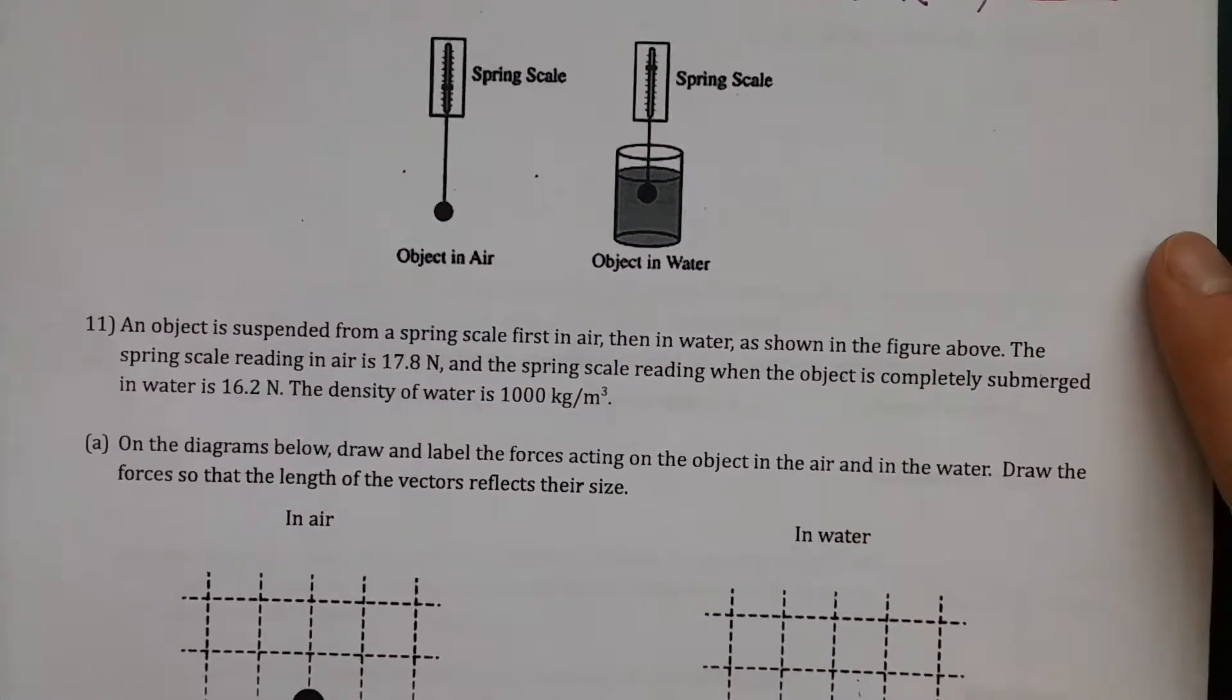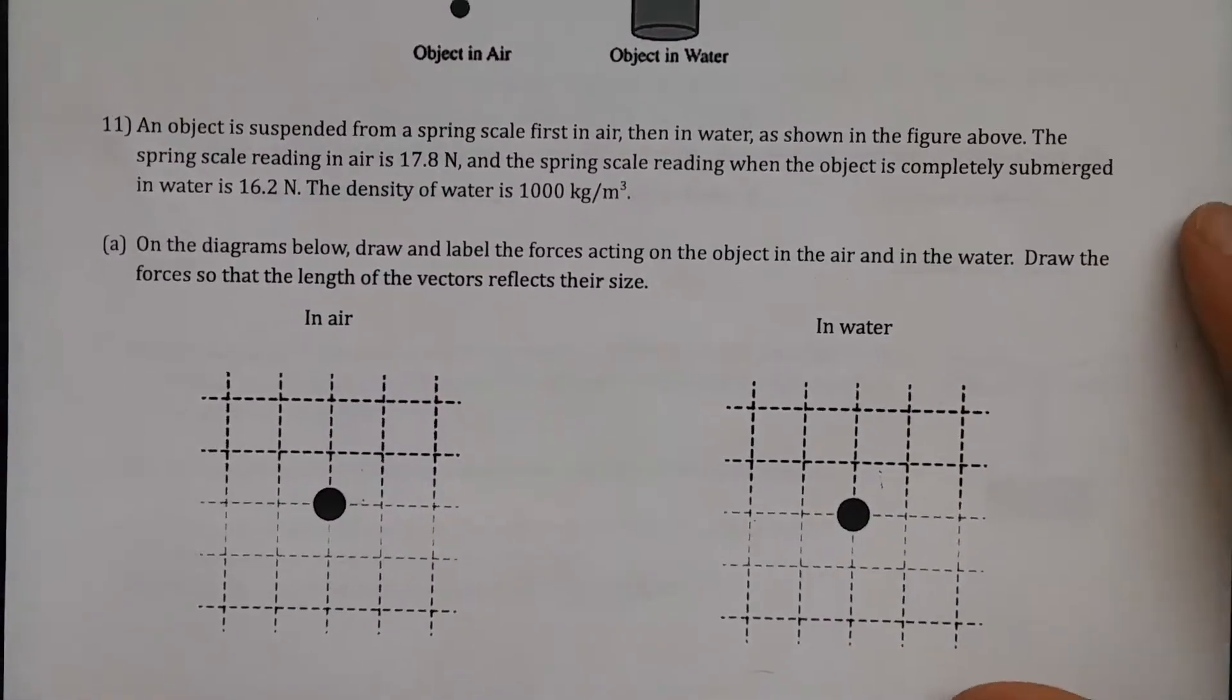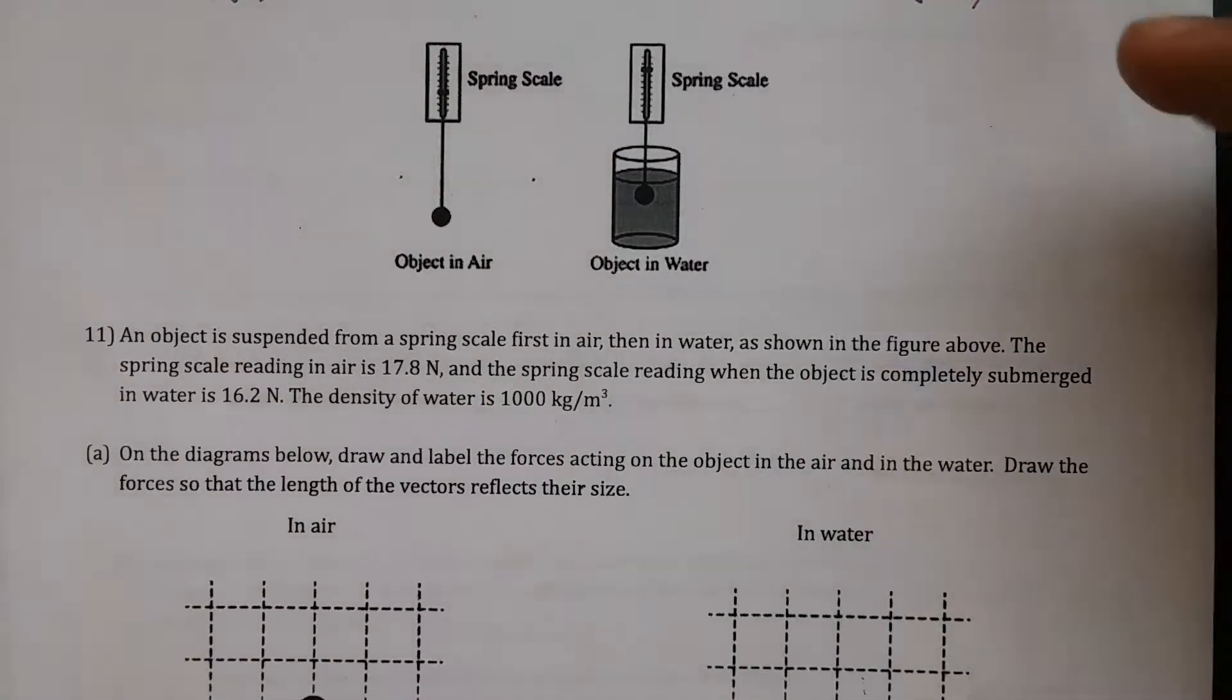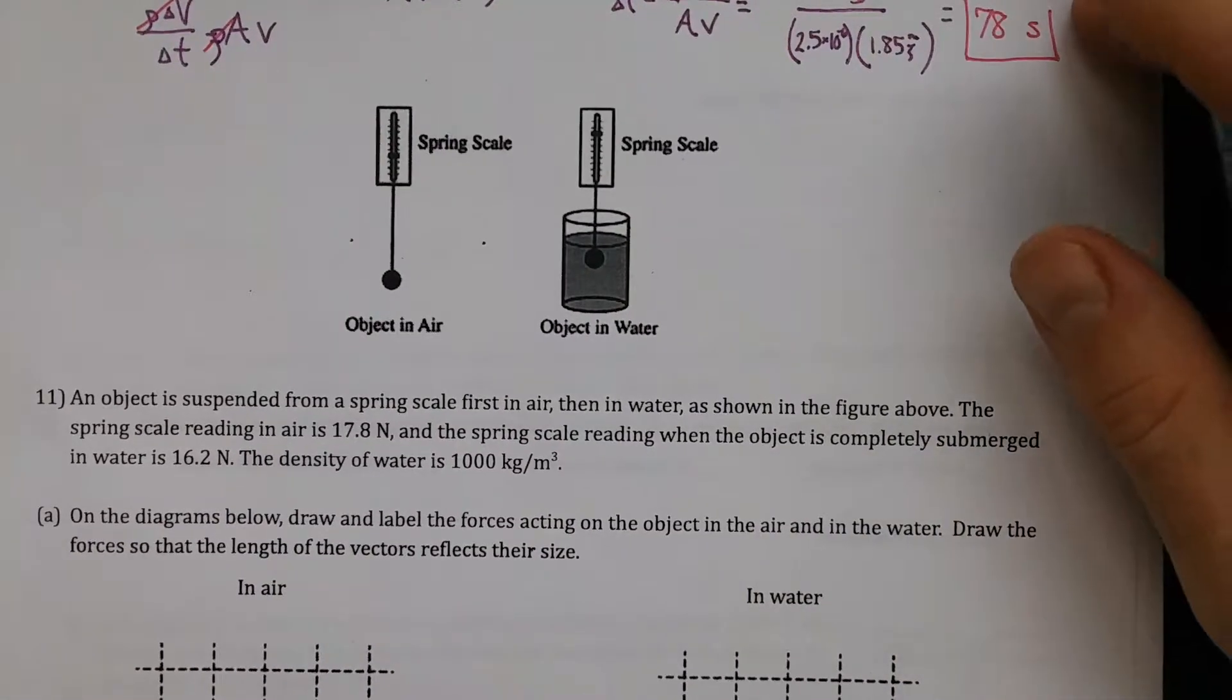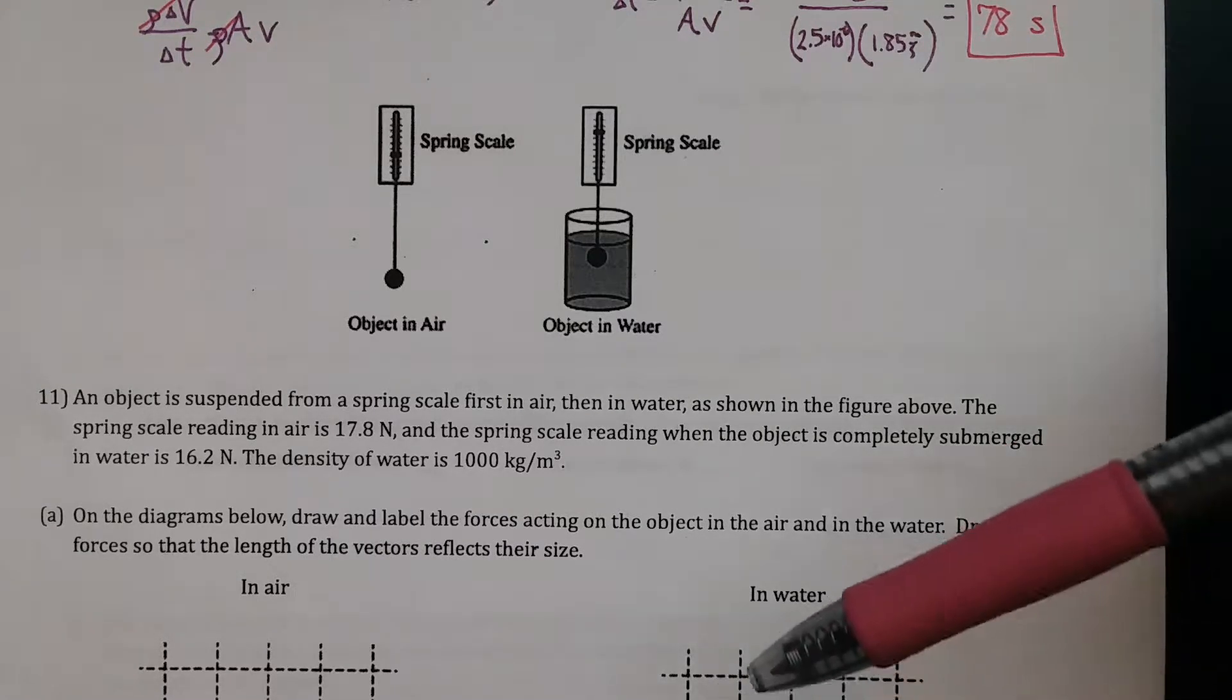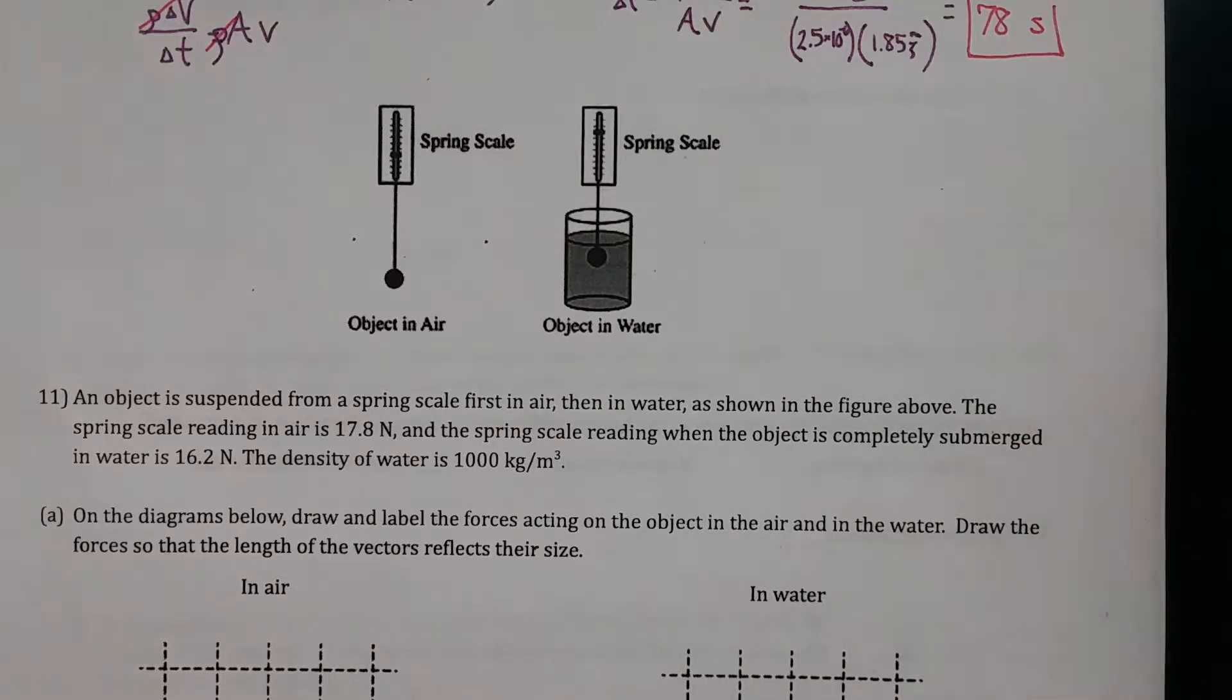All right, take a look at this free response question. An object is suspended from a spring scale first in air then in water. As shown in the figure above, the spring scale reading in air is 17.8 newtons and the spring scale reading when the object is completely submerged in water is 16.2 newtons. The density of water is 1,000 kilograms per cubic meter.